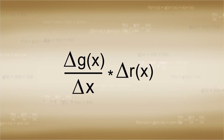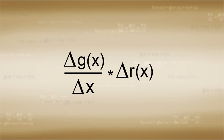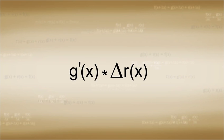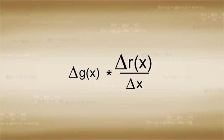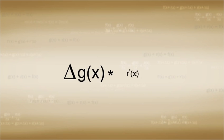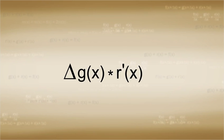The problem left over can be written as Δg(x) over Δx times Δr(x), which approximates to g'(x) times Δr(x). Or alternatively, Δg(x) times Δr(x) over Δx, which approximates to Δg(x) times r'(x).